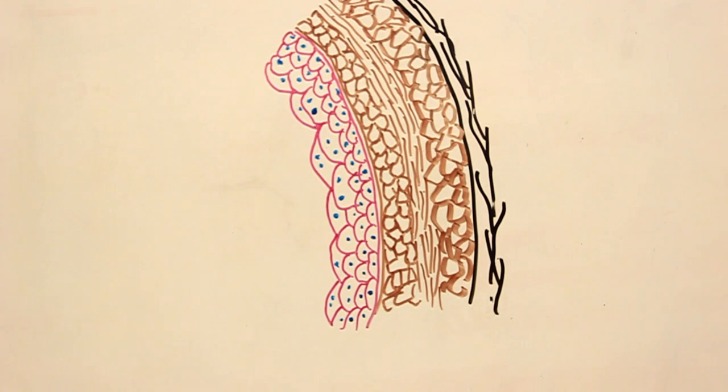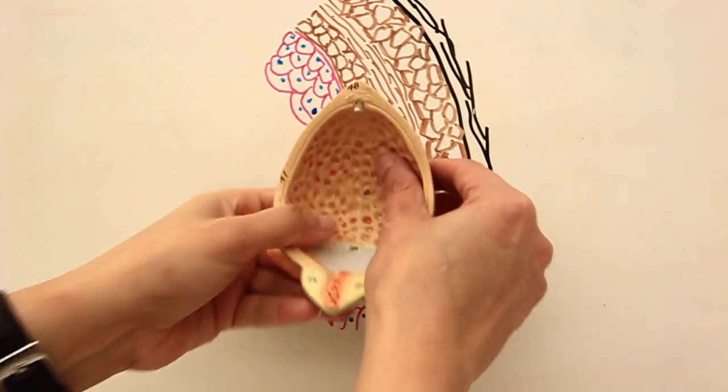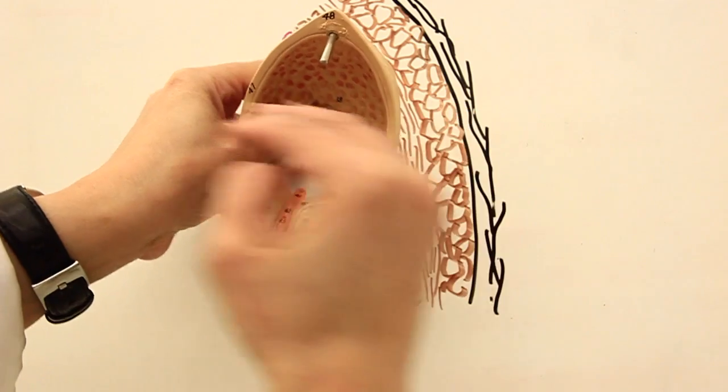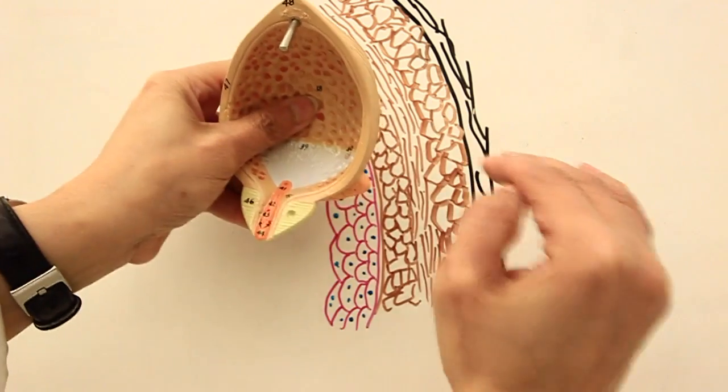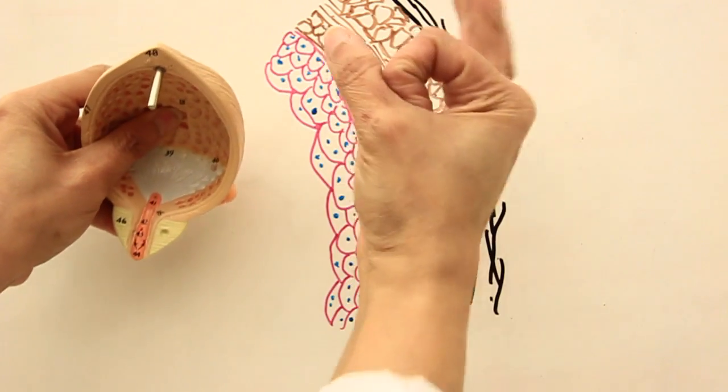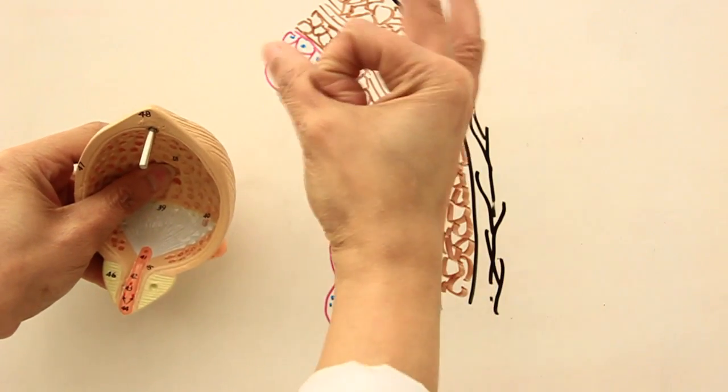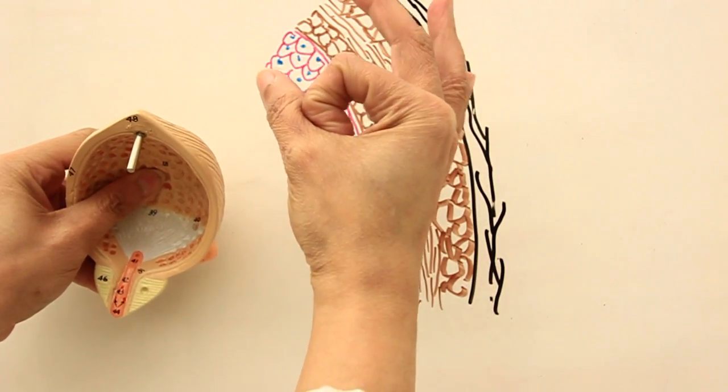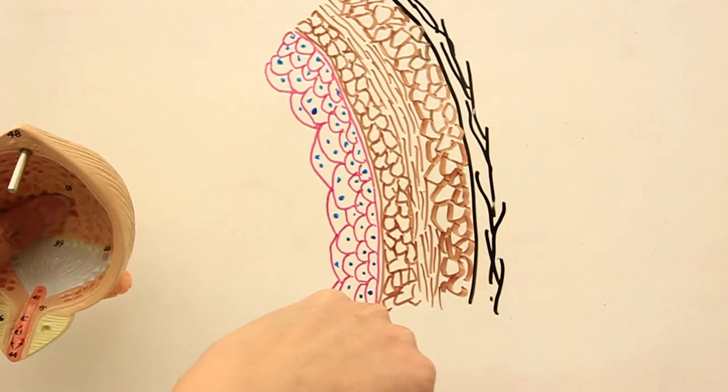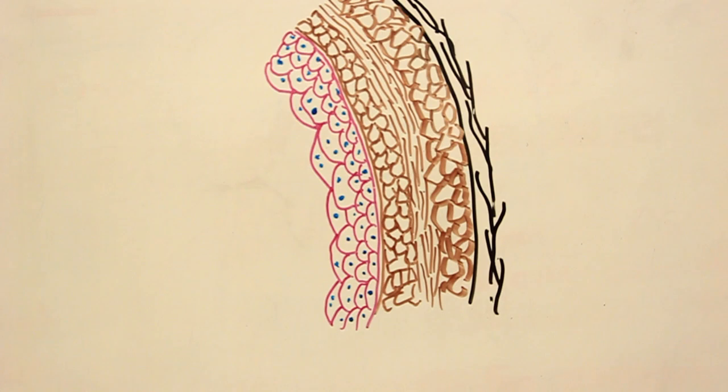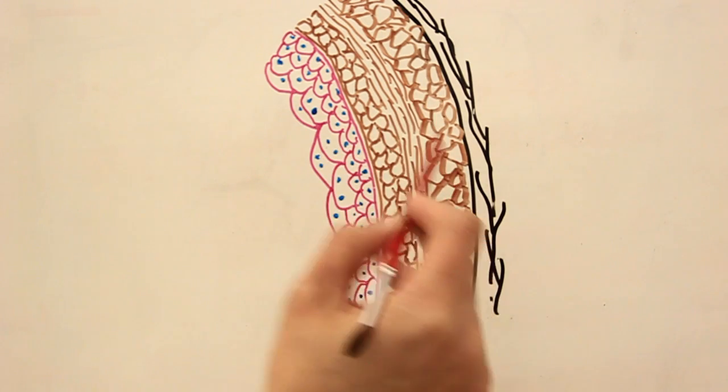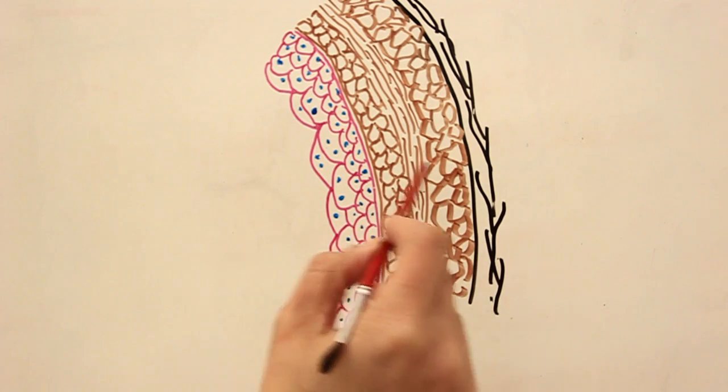They appear like this because if the muscles are longitudinally running, when you section the bladder transversely across the wall, the bundles of muscles will appear like circles. While the circular muscle will appear like cords. So the detrusor muscle has been arranged with outer and inner longitudinal muscle bundles; in the middle are the circular muscle bundles.